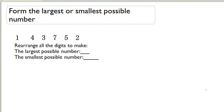Form the largest or smallest possible number. They give us six digits right over here. Let's rearrange all the digits to make the largest possible number. So we have six digits, and we want to make the largest possible number.